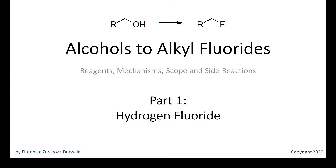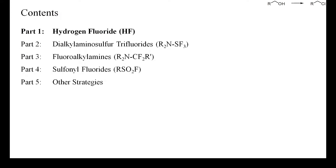Welcome to this video playlist about the best methods for converting aliphatic alcohols into alkyl fluorides. In this first part, I'll show you some examples of the use of hydrogen fluoride as a deoxyfluorinating reagent. This is the least expensive reagent available, but unfortunately only highly reactive alcohols can be converted into fluoride with it. More powerful and versatile deoxyfluorinating reagents are presented in parts 2 to 5 of this playlist.